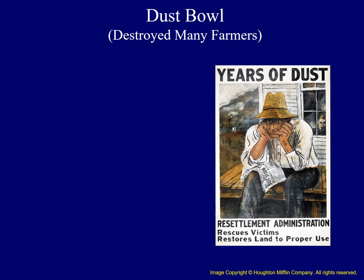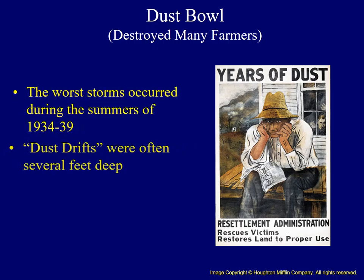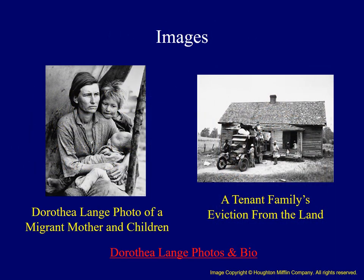The worst storms of the Dust Bowl took place during every summer between 1934 and 1939. We're all familiar with snow drifts — well, they experienced dust drifts that were often several feet deep. These photographs provide a strong visual image of the predicament faced by many American farmers. On the left, we see a photograph by Dorothea Lange of a mother with her children. On the right, we see a tenant family being evicted from their property. There's a hyperlink below to additional information about Dorothea Lange and many of her photographs.